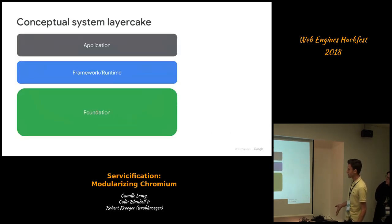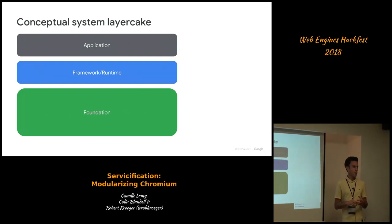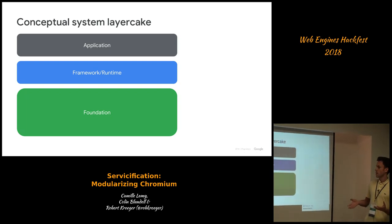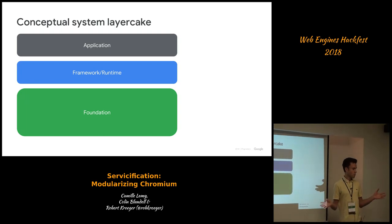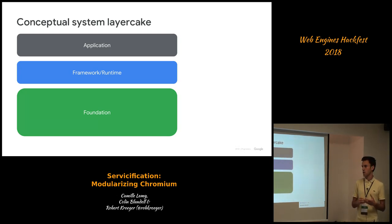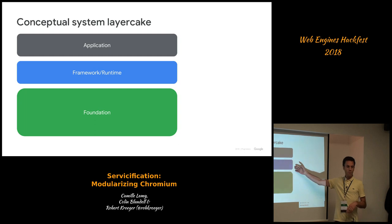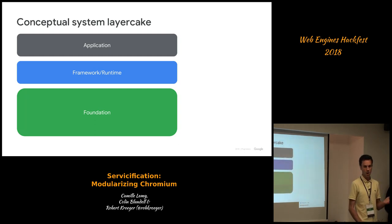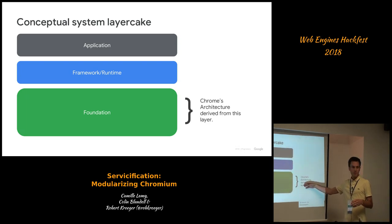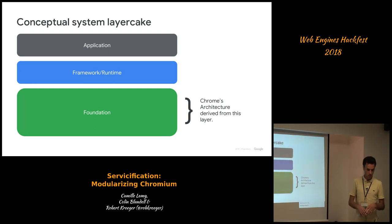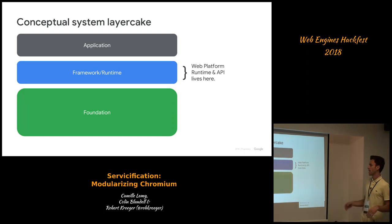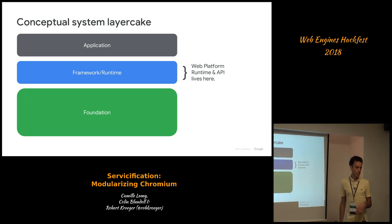The servicification project's conceptual system layer is in no way rocket science. It's basically saying we should have a foundation layer with core services — like the network as a service, web browsing as a service, security policies for web browsing as a service. You have frameworks and runtimes that live above those, and then applications that build on whatever frameworks and runtimes there are. At the end, the services should be this foundation layer, which is really a composition of the various services. And then as the most important and canonical example of a framework or runtime, you have Blink, which lives there. Applications can then be anything that lives on top.